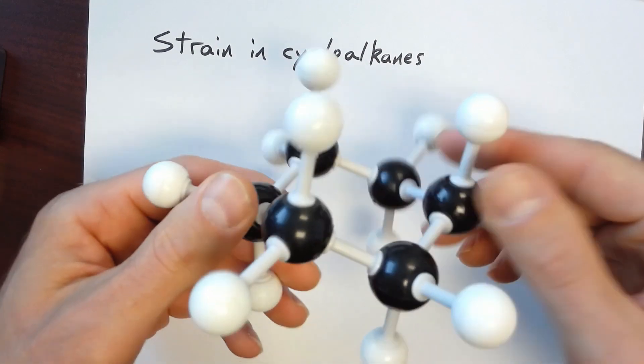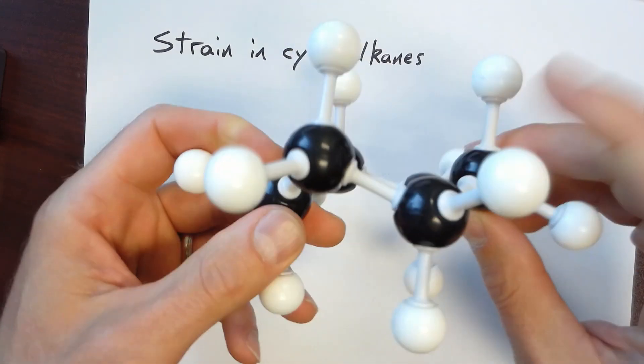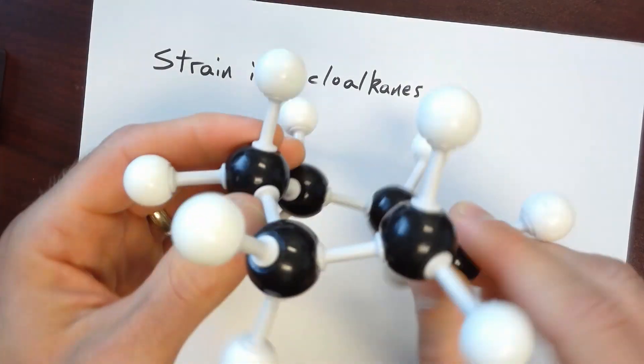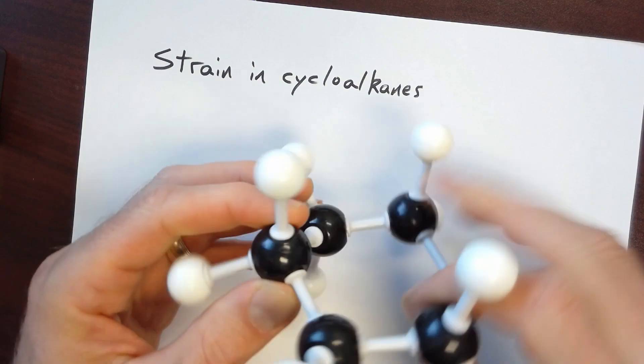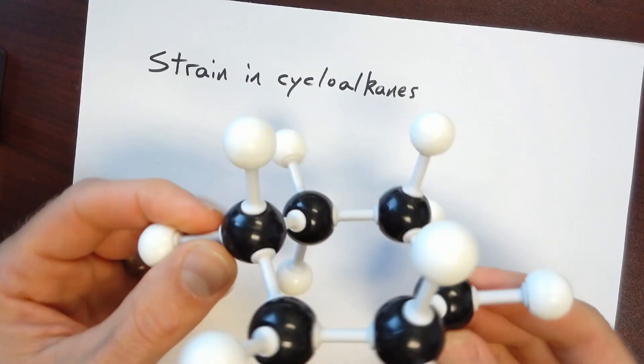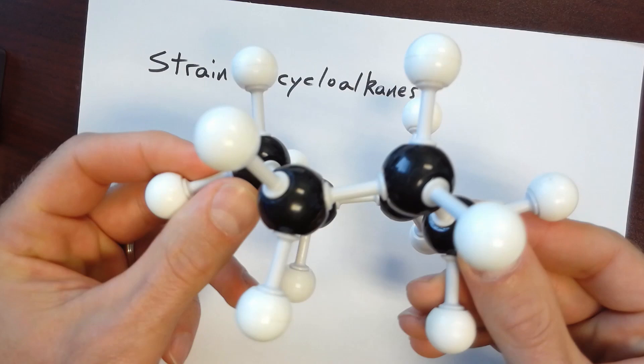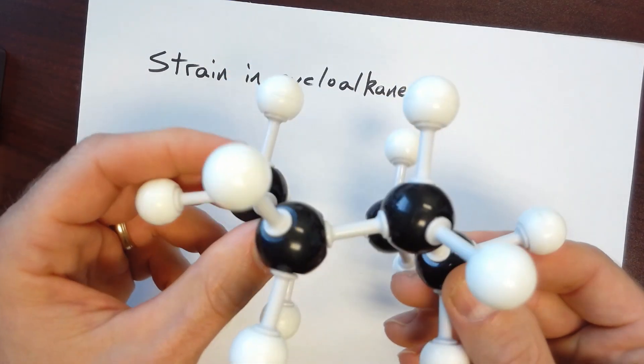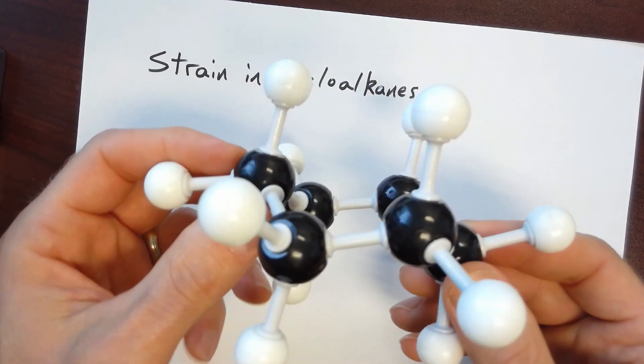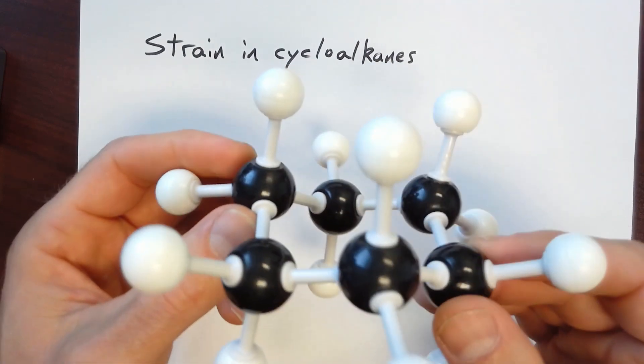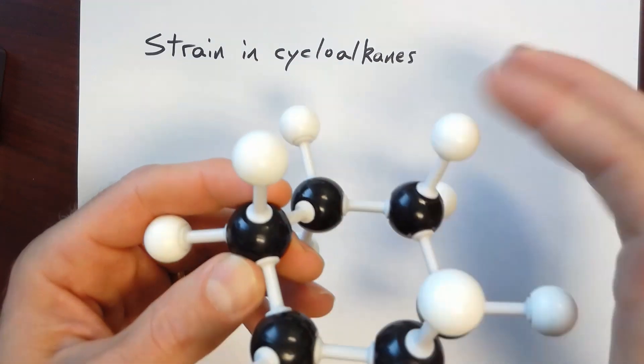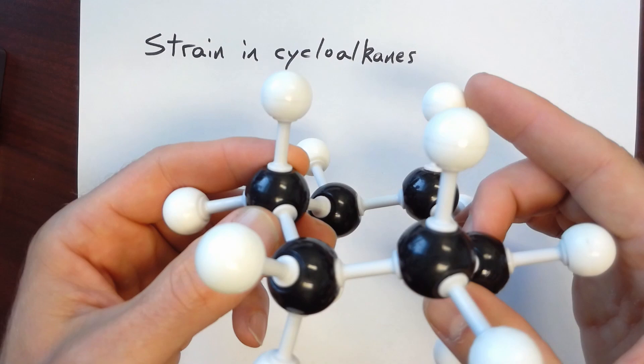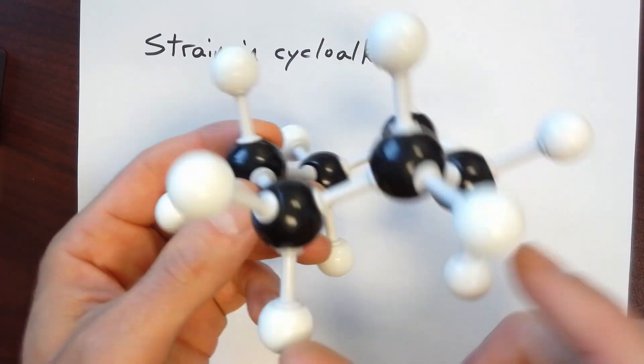Now, cyclohexane can do what's called a ring flip. That is, these up-carbons can become down-carbons. And the hydrogens can flip from equatorial positions to axial positions. Now, for cyclohexane, both of these conformations are the same, because every bond is a carbon-hydrogen or carbon-carbon bond.